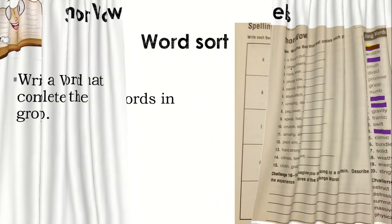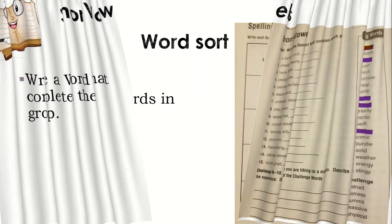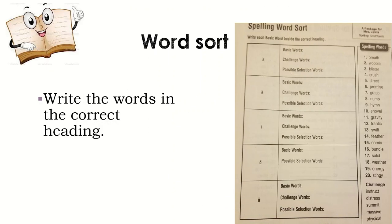On page number five, you will sort the words. To sort is separate by groups. Write the words in the correct heading or in the correct group. You have this activity in your notebook. Be sure that you write the 25 words in the list.